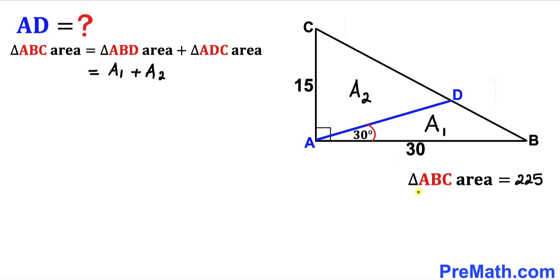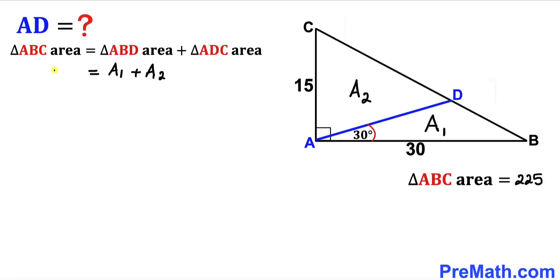We know that the area of triangle ABC is 225, so we can replace it: 225 equals A₁ plus A₂. Now we are going to calculate these individual areas A₁ and A₂.